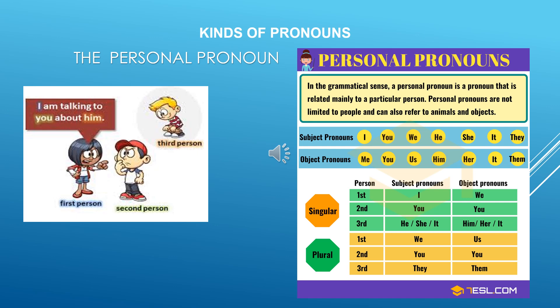For example: I am happy. You are happy. And the third person — he is happy, she is happy, it is happy. So it depends on the subject and the verb; the verb will have to agree with the subject, so the verb keeps changing. We're going to do subject-verb agreement later, so this person concept has to be very clear.